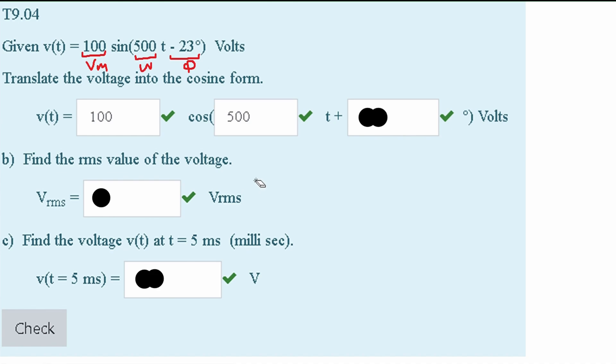The only thing that's going to change is our phase angle, and to change our phase angle from sine to cosine, we are going to have to subtract 90 degrees.